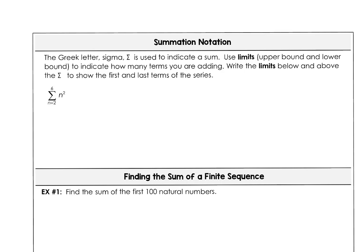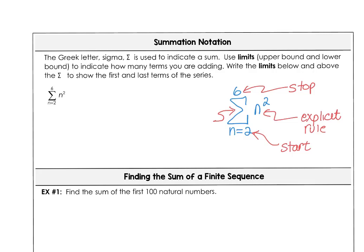Let's do this with a little practice. The Greek letter sigma is used to indicate the sum. So if we have the sum as n goes from 2 to 6 of n squared, you can see this piece is our explicit rule. n equals 2 is our lower limit, that's where we start. And 6 is our upper limit, that's where we stop.